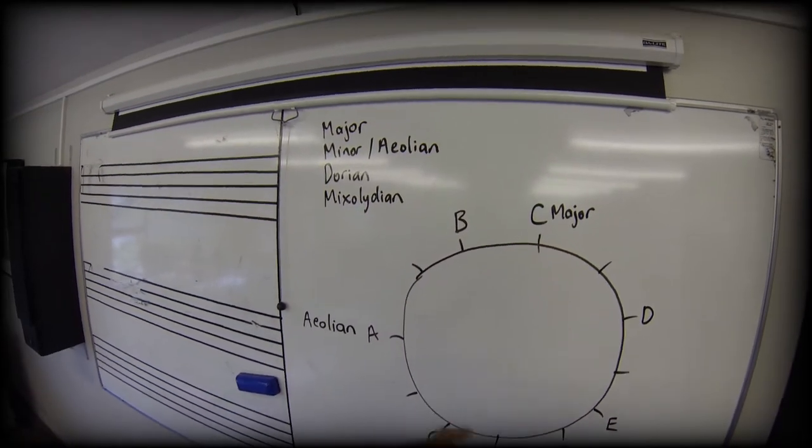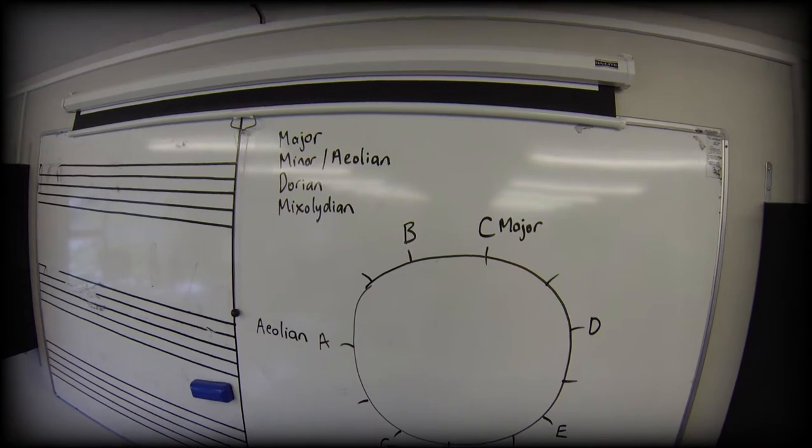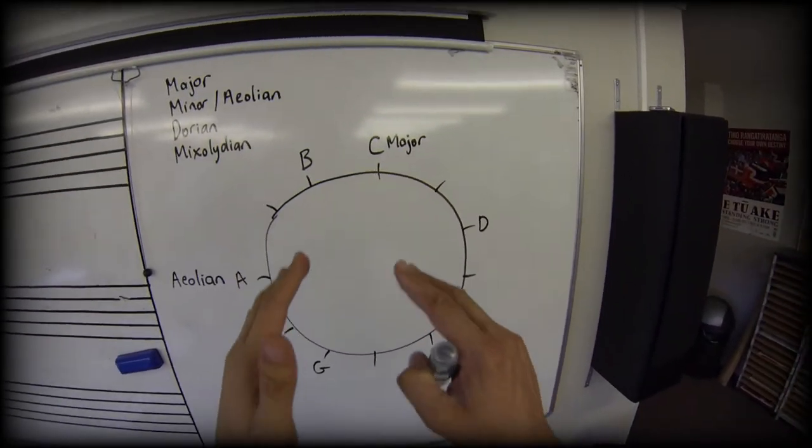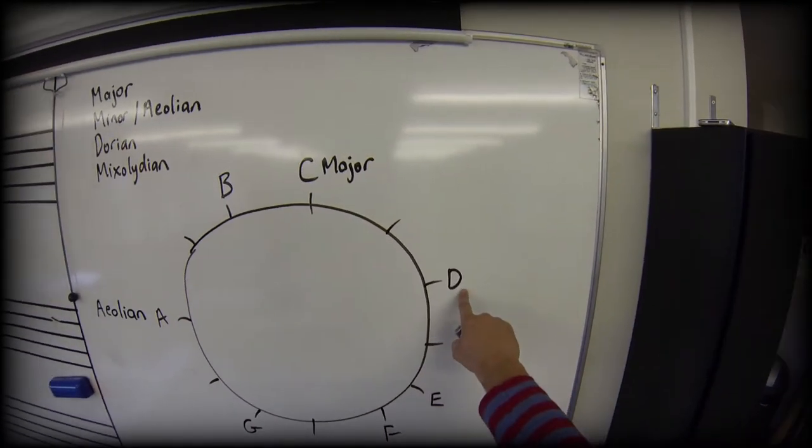Let's now take the same group of notes and we're going to start from D. So if that was my A, A B C D, there's my D.